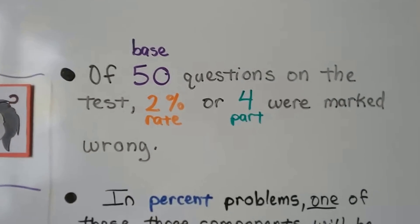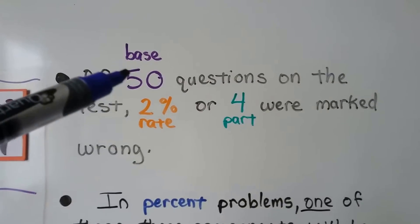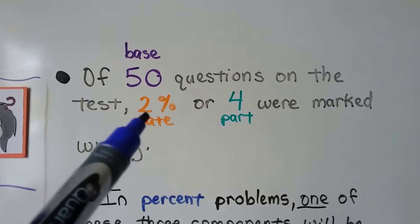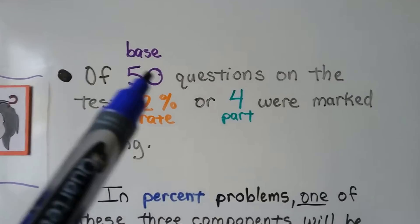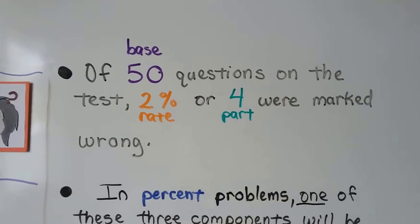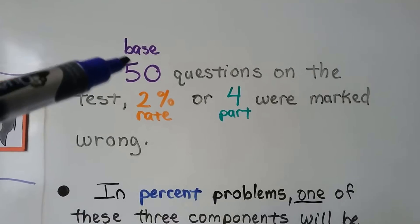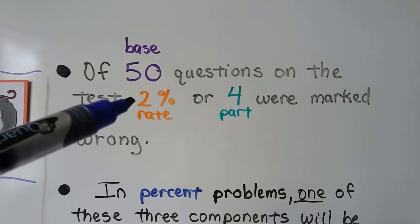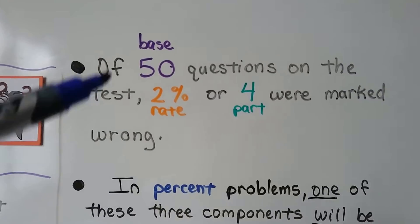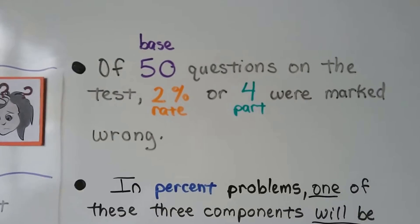It says of 50 questions on the test, 2% or 4 were marked wrong. So the 50 is the base, that's the original amount. Our rate is the number that has the percentage sign, and the 4 is the part of this 50. So 4 out of 50 were marked wrong, that means 2% were marked wrong. When we double this to be 100, that would make more sense. If this was 100, we double this to be 4%, that would mean 8 were marked wrong.